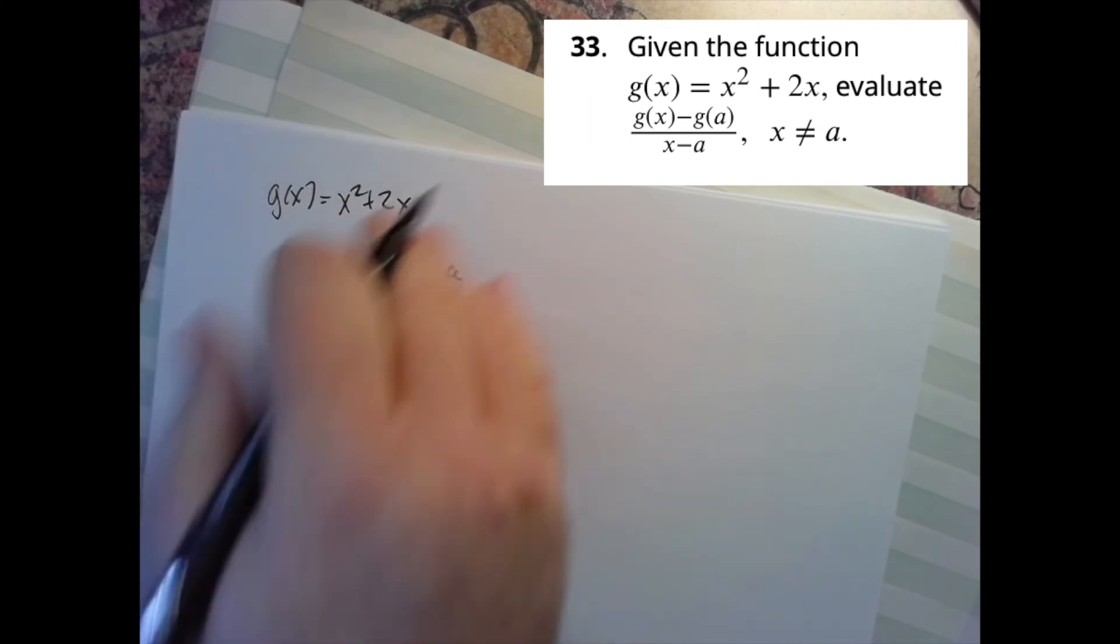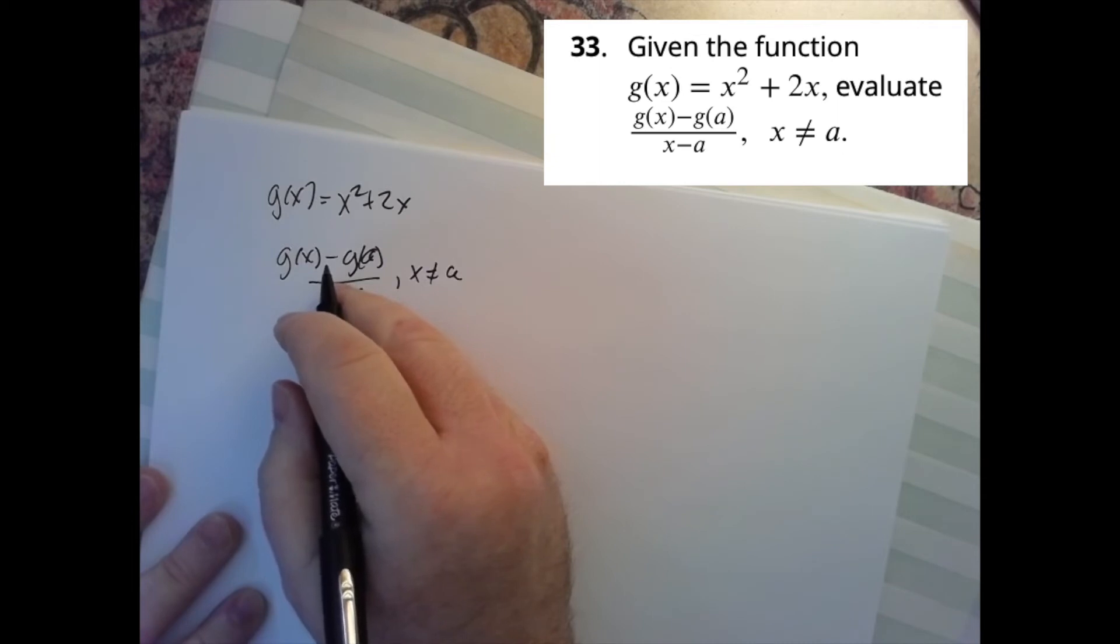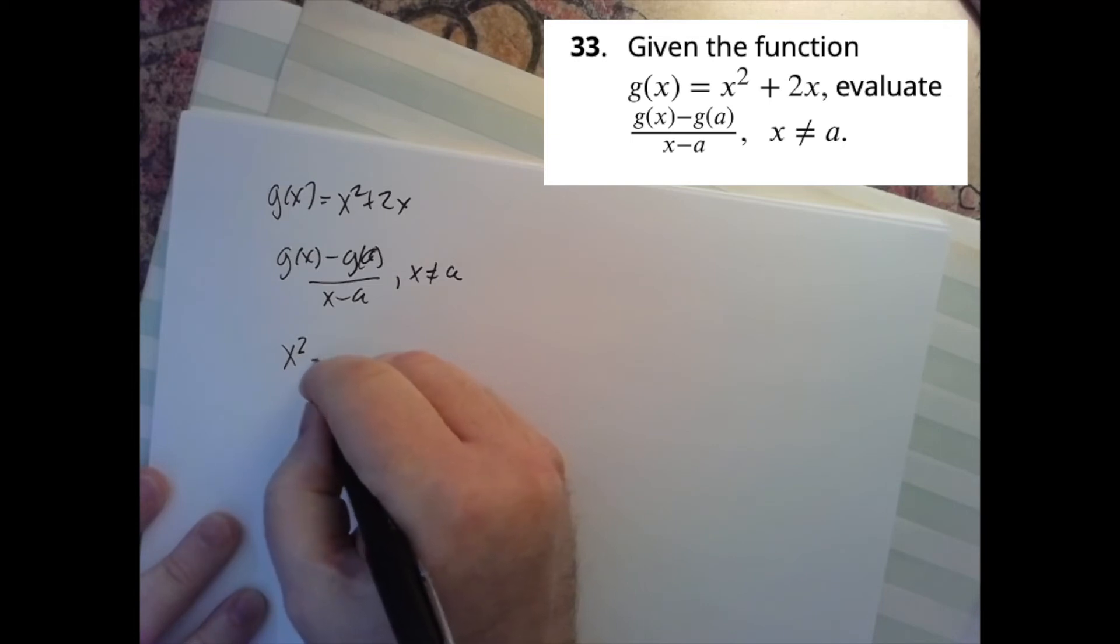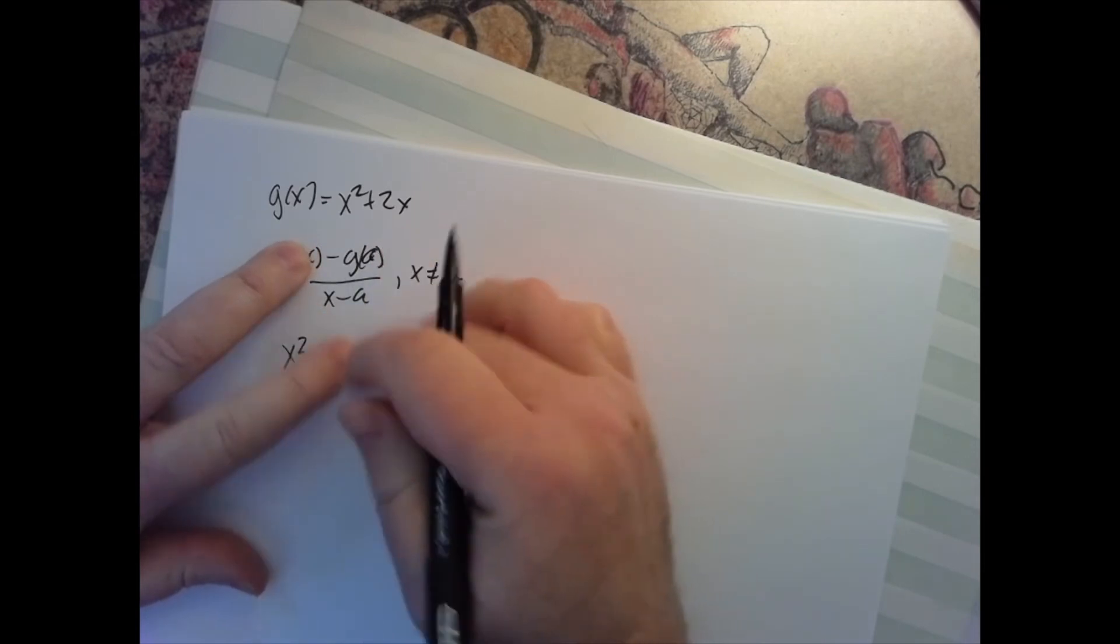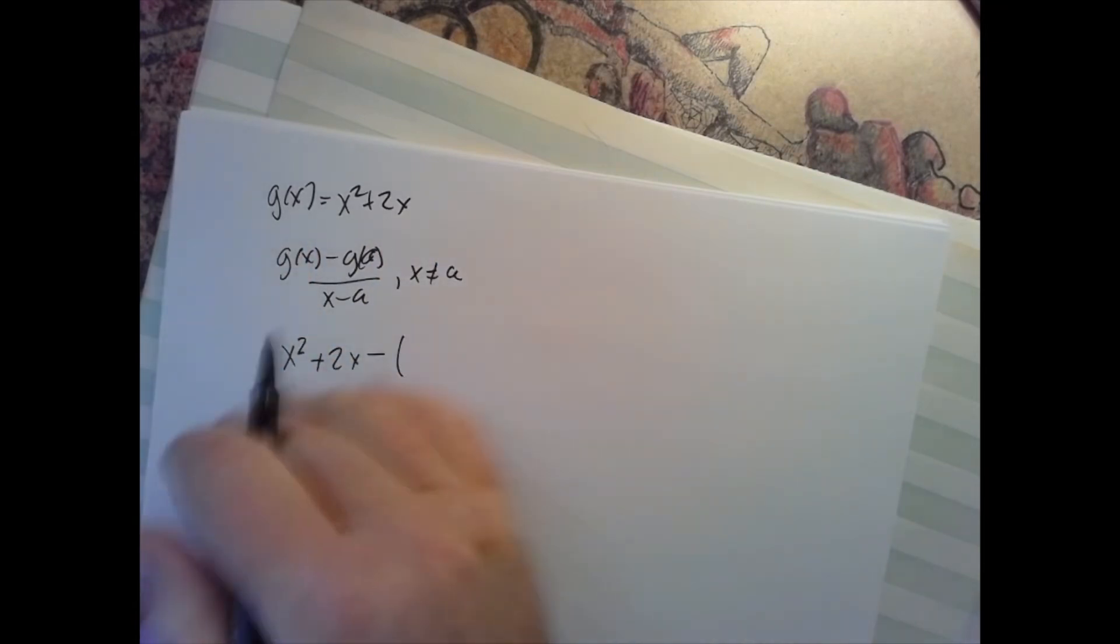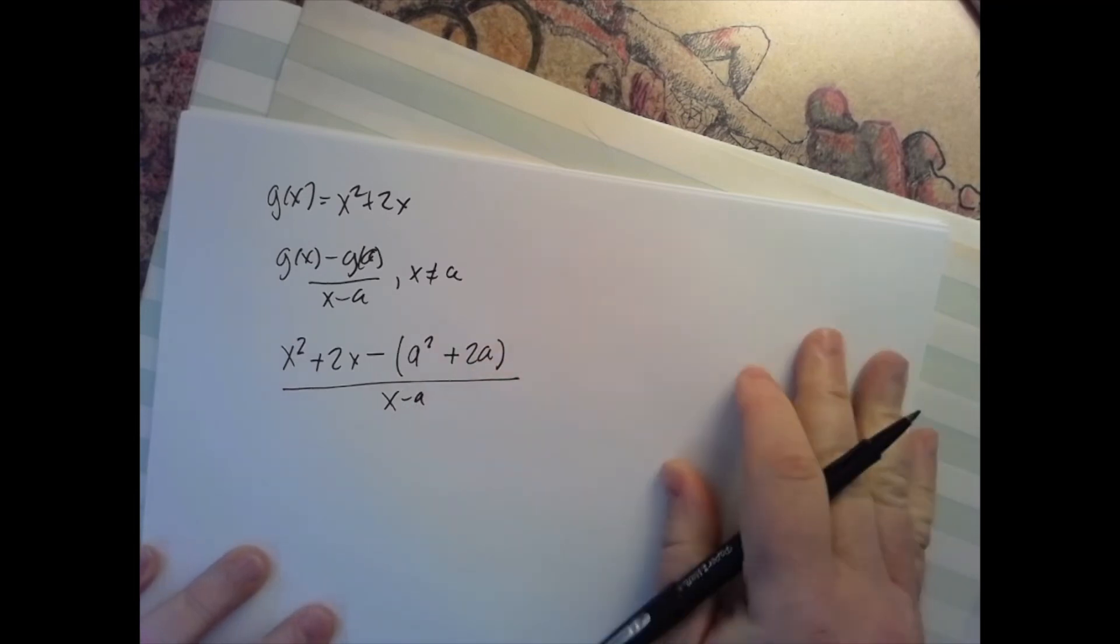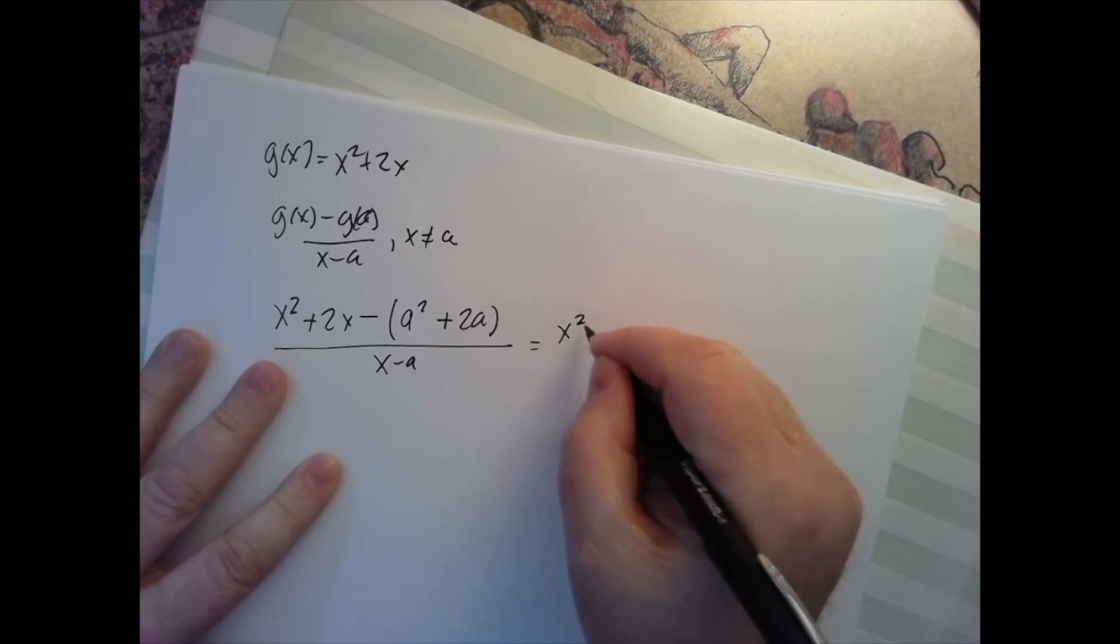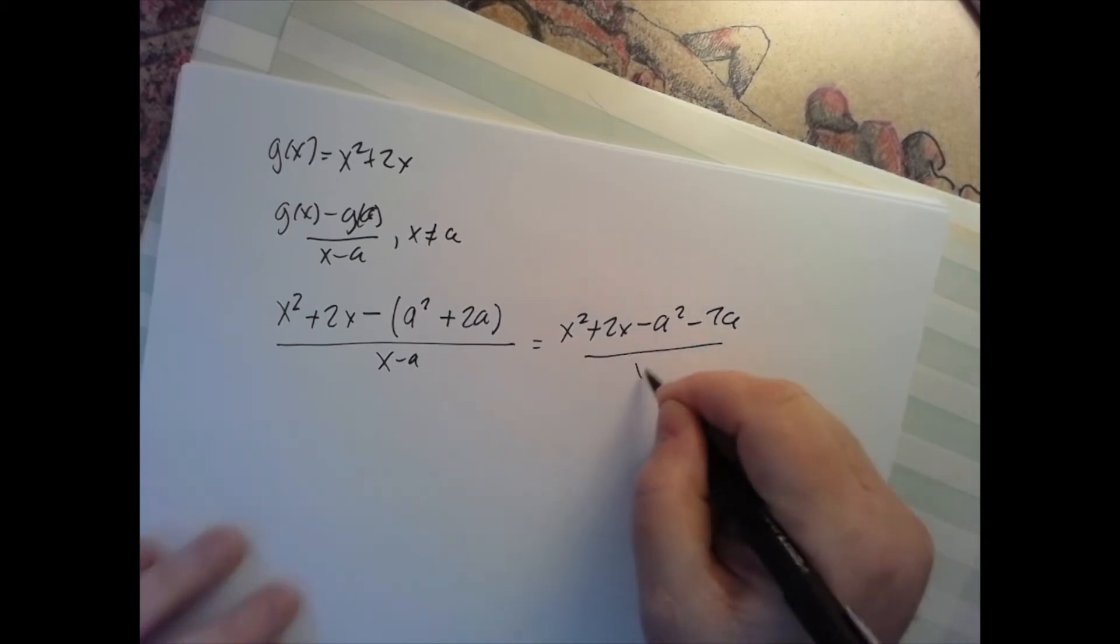But in other words, just plug in what we need to. So I want to evaluate the given function. So in other words, let's just plug all this stuff in. So this would be x squared plus 2x minus now this subtraction means that it's subtracting the whole thing. So I really need to have a parentheses in here like this. Now I can distribute the minus or the negative sign and I get something that looks like that over x minus a.